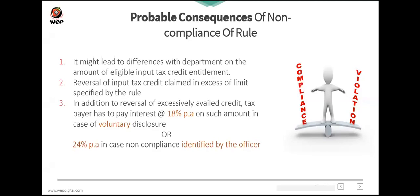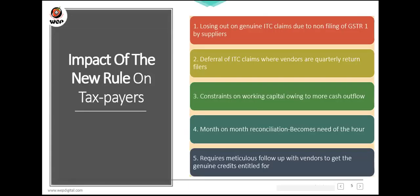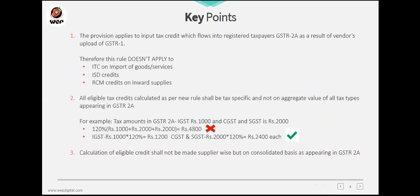Next question: how does the figure of 4,800 come up? This was shown as a wrong example. If you take IGST, CGST, and SGST together and calculate 120% on the aggregate, you get 4,800 — but this is incorrect. The tax rule specifies it is tax-specific: 120% must be calculated on each tax separately — IGST separately, CGST separately, SGST separately. Taking the aggregate and applying 120% on that gives 4,800, which is the wrong approach.